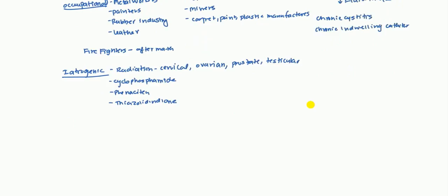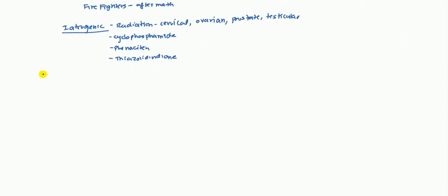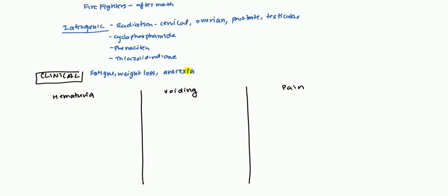So let's now focus on the clinical aspect. One of the main findings that you will find is hematuria, voiding, or some sort of pain. So these are your three main symptoms which are associated with bladder cancer. However, they will have some general constitutional symptoms, such as fever, weight loss, and anorexia. But of course, that's common in any tumor that's found. So let's talk about these three main symptoms.